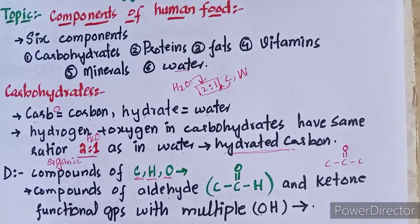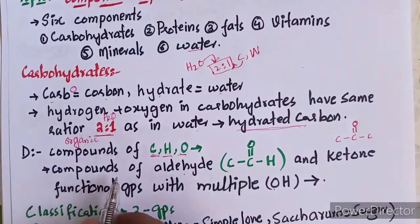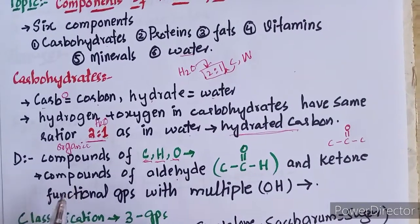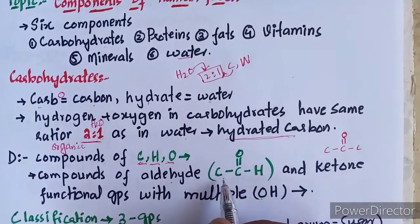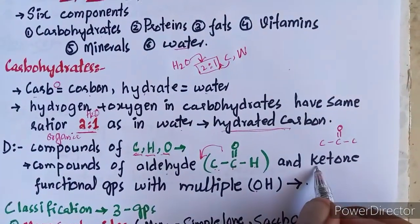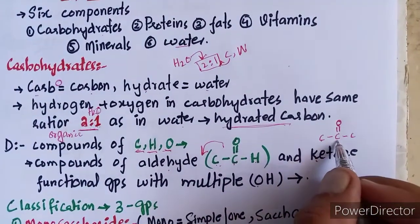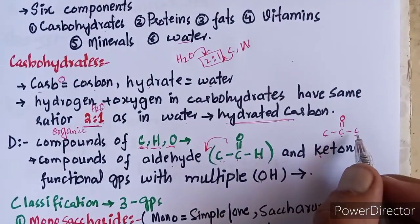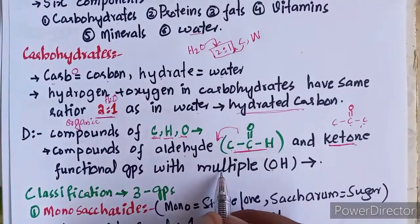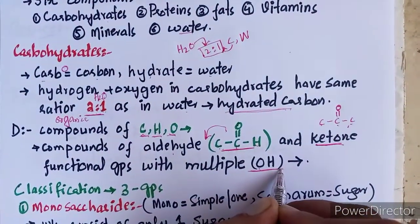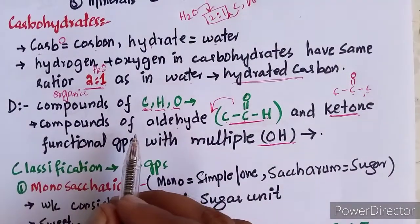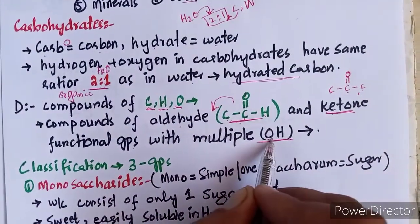At a higher level, the definition to remember is: carbohydrates are compounds of aldehyde and ketone functional groups with multiple OH groups. Those compounds which have an aldehyde or ketone functional group and many hydroxyl (OH) groups are called carbohydrates. This is the definition you need to memorize for the 2M level.